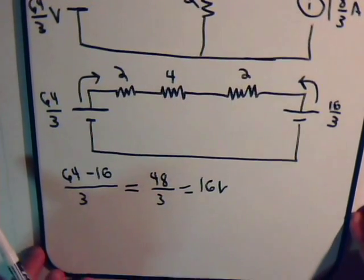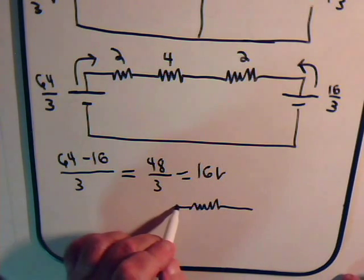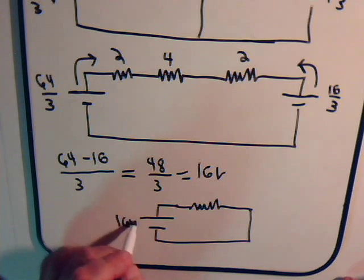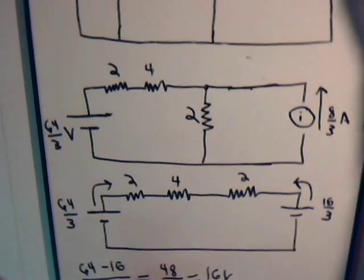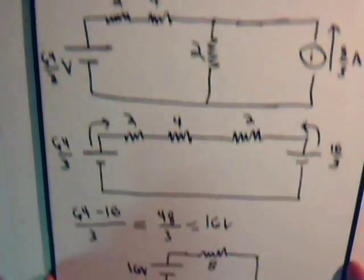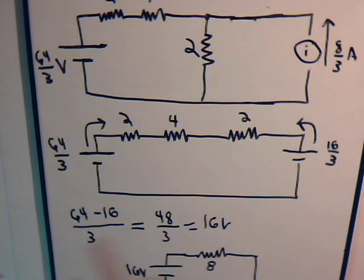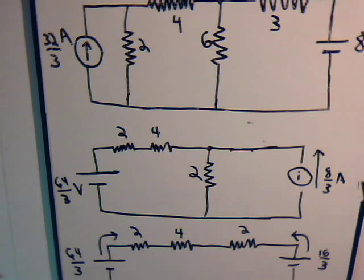So finally here is our equivalent circuit. To get from our original circuit all the way down to here, we didn't have to use any mesh current analysis or any node analysis techniques. It was just simply manipulating the circuit by using our source conversion techniques that we discussed in the previous video.